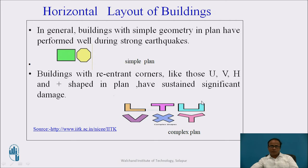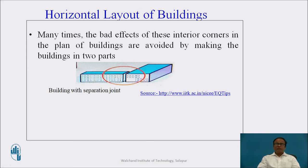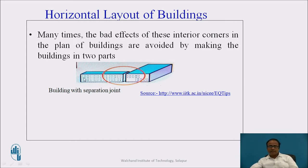You can see the complex plan shapes: L, T, U, V, X, and Y. Many times the bad effects of these interior corners in the plan of buildings are avoided by making the buildings in two parts. For example, considering an L-shaped plan of a building, we can provide a separation joint which divides the L-shaped plan into two rectangular parts. These two rectangular parts are separated by the separation joint, as shown in the figure.